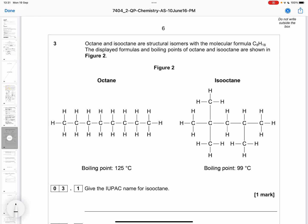Octane and isooctane are structural isomers with the molecular formula C8H18. The displayed formulas and boiling points are shown in figure 2. Structural isomers are compounds with the same molecular formula, in this case both are C8H18, but they have different structural formulas, so their structure and name will be different.